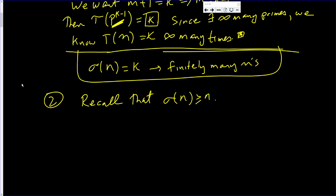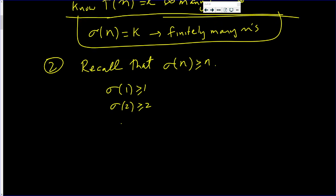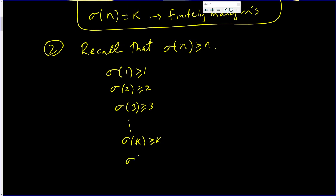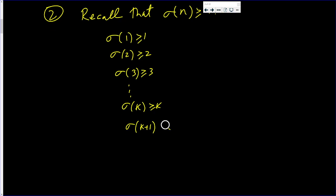So now let's consider sigma of 1, that is bigger than or equal to 1. Sigma of 2, that is bigger than or equal to 2. Sigma of 3, that is at least 3, all the way down to sigma of k, which is at least k. It is really bigger than k. But sigma of k plus 1 is bigger than k. Sorry, it is bigger than k plus 1 or greater than or equal to k plus 1, but it is bigger than k. And sigma of k plus 2 is bigger than k. All the way down. All of these numbers are bigger than k.